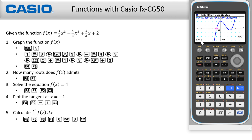You can navigate through the roots using the arrow keys. In this case we have three roots: x equals negative one, x equals two, and x equals three.